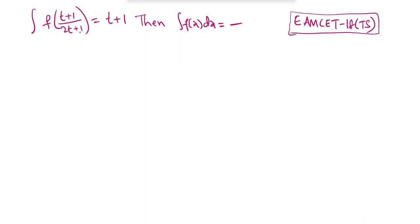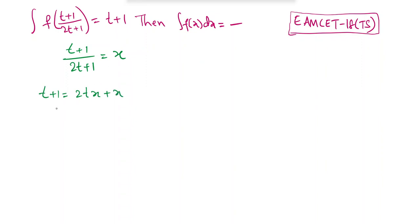MSet 2018 TS paper: given integration of f((t+1)/(2t+1)) = t+1, find integration of f(x) dx. Let (t+1)/(2t+1) = x. Cross-multiplying: t+1 = 2tx + x, so 1 minus x = 2tx minus t = t(2x minus 1). Therefore t = (1 minus x)/(2x minus 1).